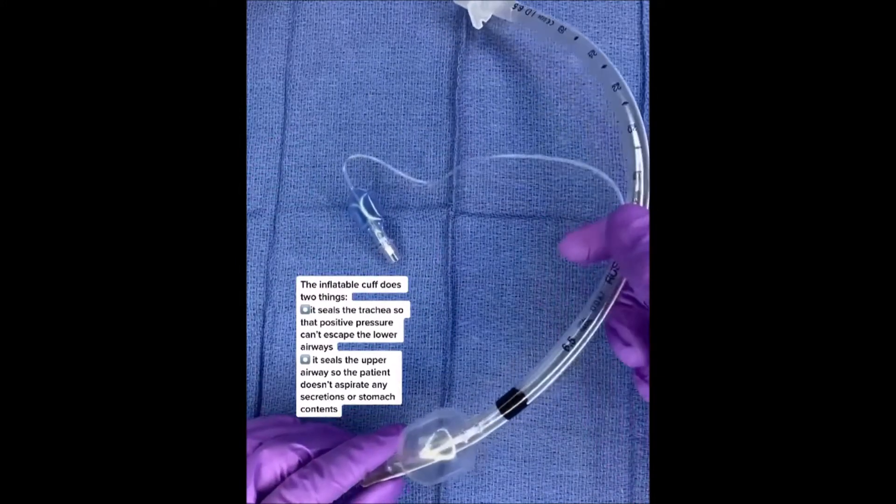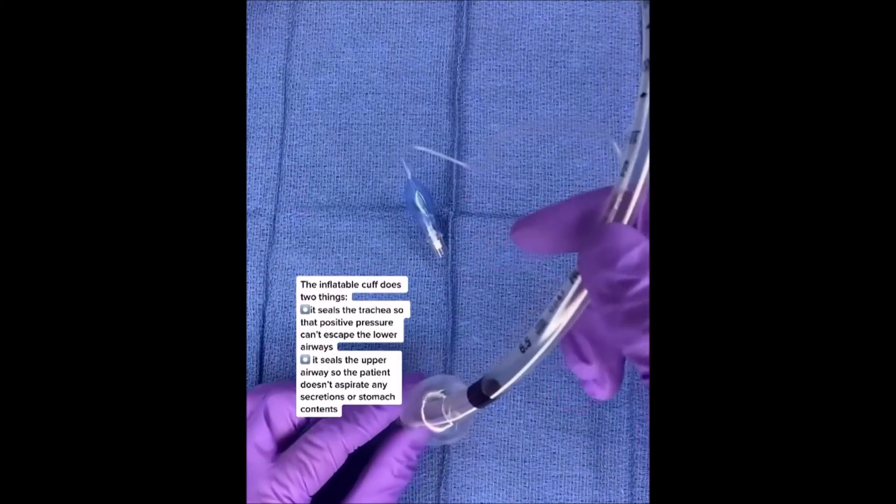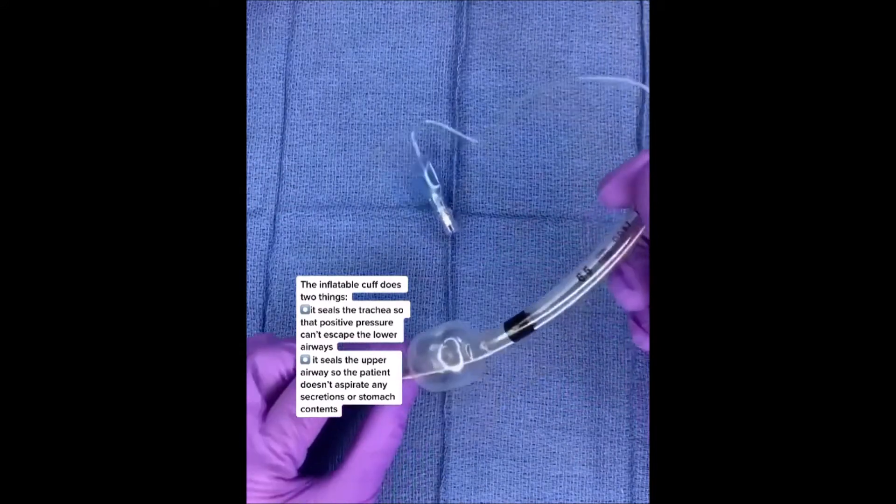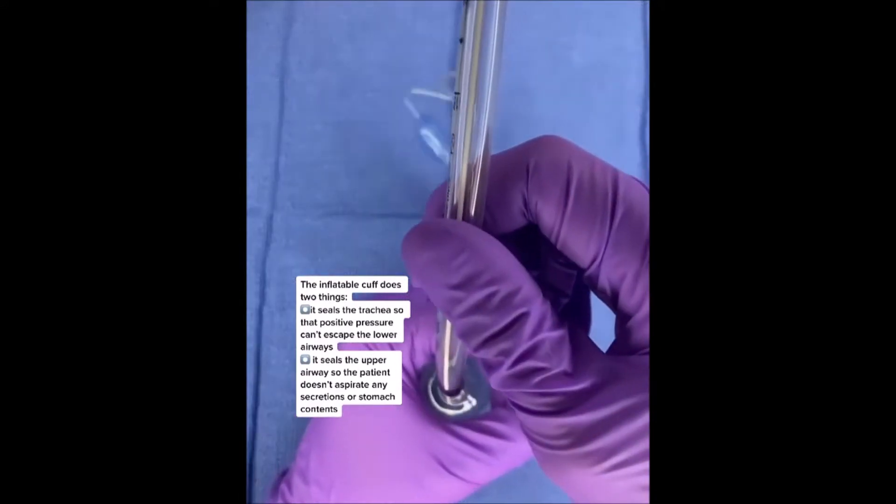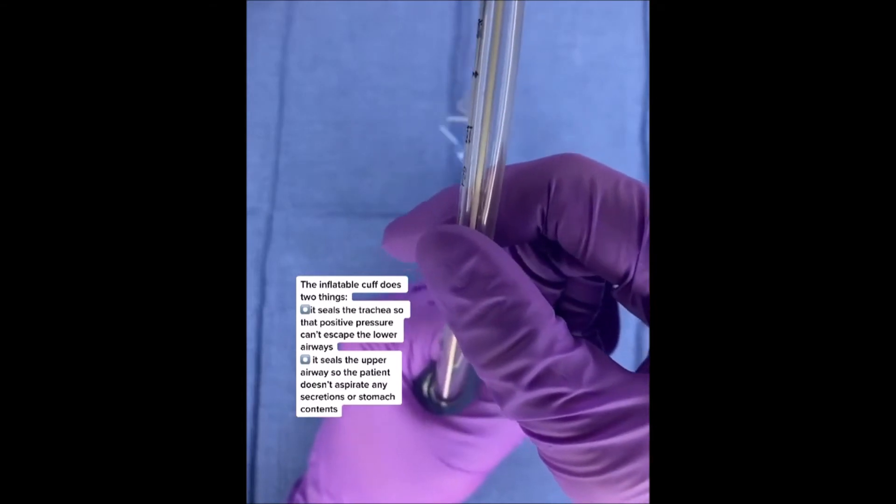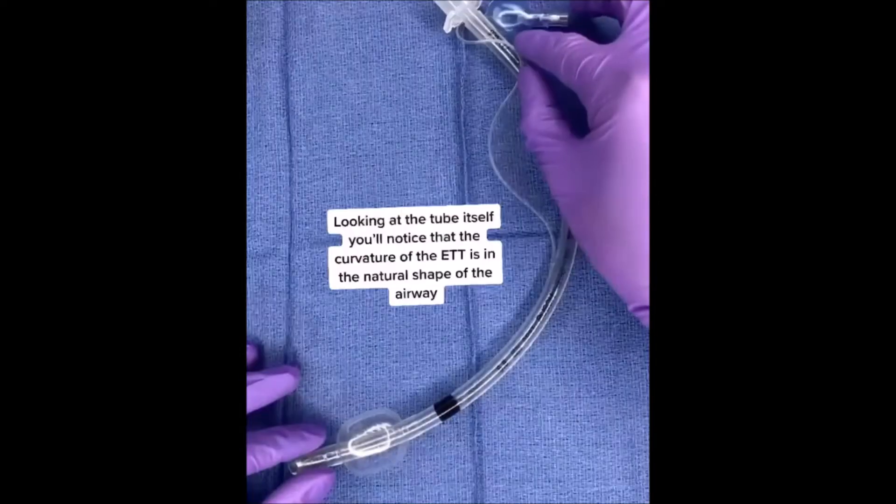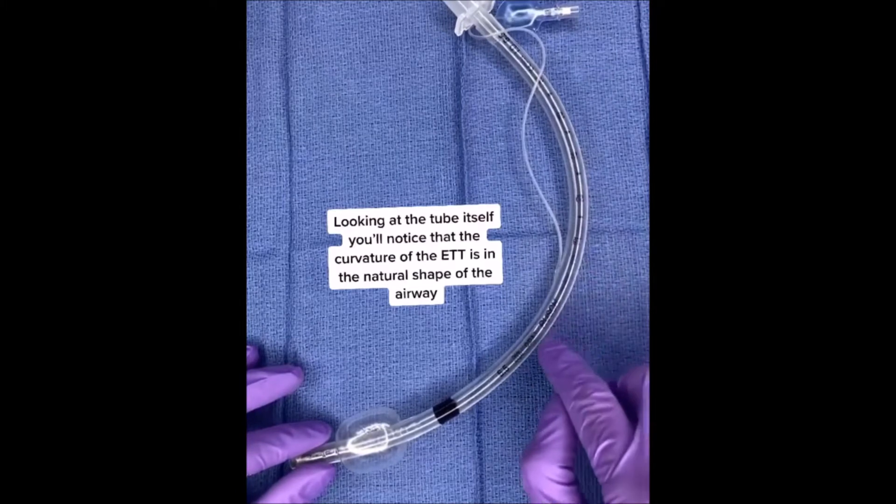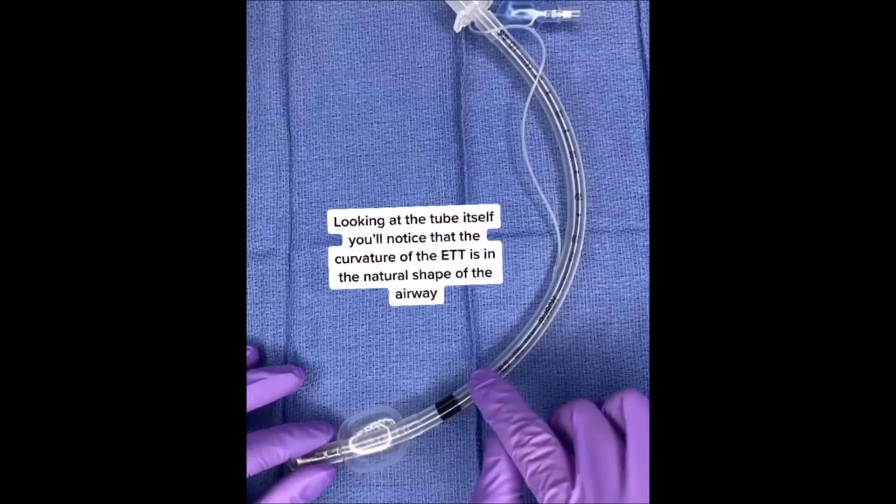It seals the trachea so that positive pressure can't escape from the lower airways, and it seals the upper airway so that the patient doesn't aspirate any secretions or stomach contents. This is an example of how it occludes the trachea. Looking at the tube itself, you'll notice that the curvature of the ET tube is in the natural shape of the airway.